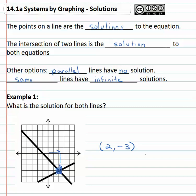First number represents the distance to the right and the second number represents the distance up, but because it's negative we end up going down. And so the solution to these lines is at the point two comma negative three. That solution works on both the top line and the bottom line.